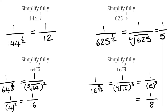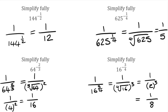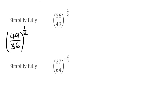Well done if you followed along and got them right. Let's have a look at some more questions. For these questions, we're looking at negative fractional indices of some fractions. Going back to our negative indices when we've got fractions, we're still looking for the reciprocal, and when we're looking for the reciprocal of a fraction, all we have to do is flip it upside down. For this first one, I've got 36 over 49 to the power of negative 1 half. Because we've got that negative power, we're looking for a reciprocal — that's the same as saying 49 over 36 to the power of positive 1 half.